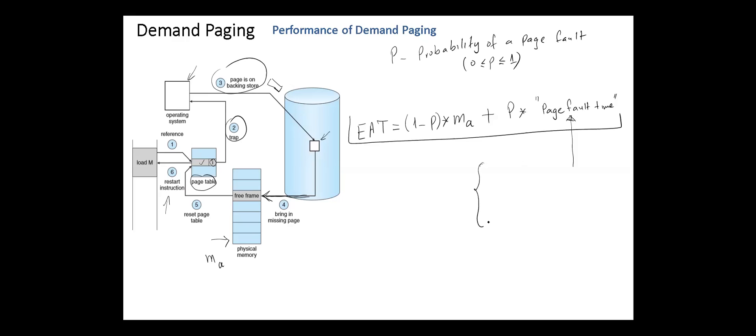But we should consider three major components: service the page fault interrupt, read in the page which is the swap time for the page, and restart the process. The first and the last steps are reduced, so the major component in the page fault time is the swapping time.